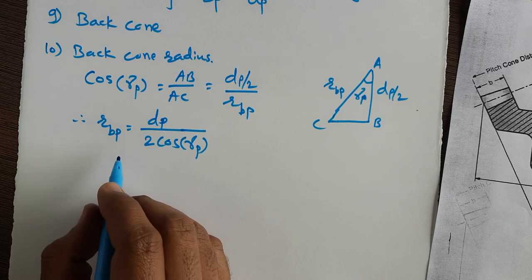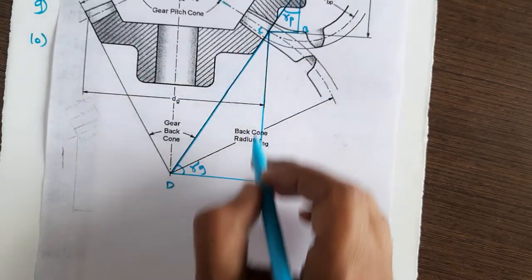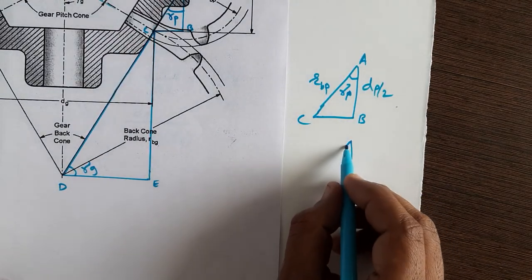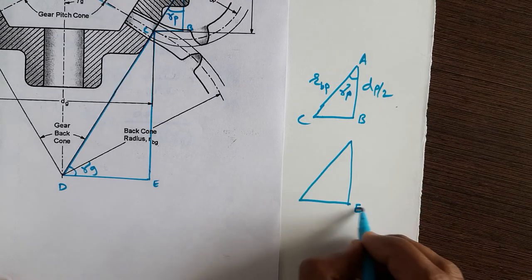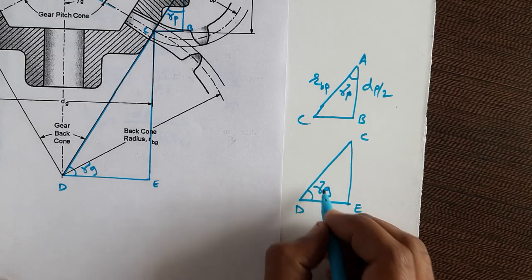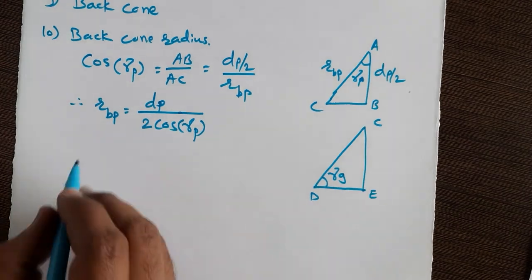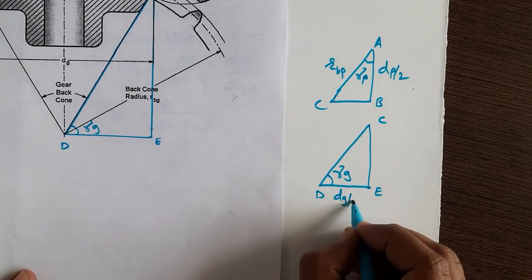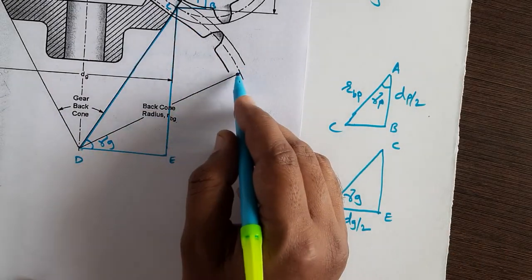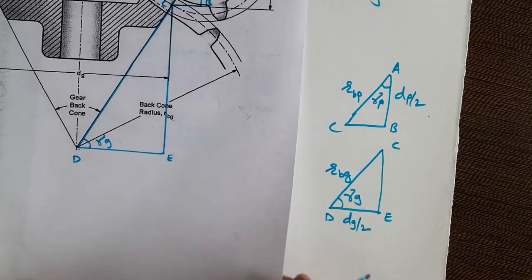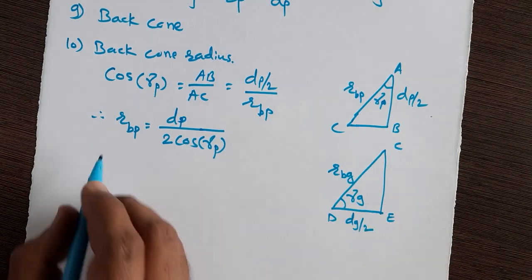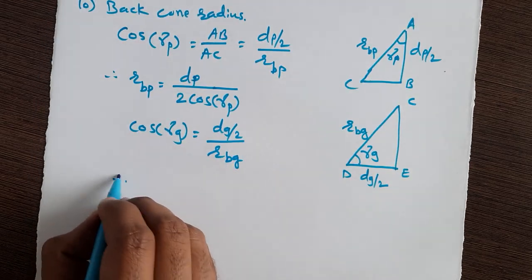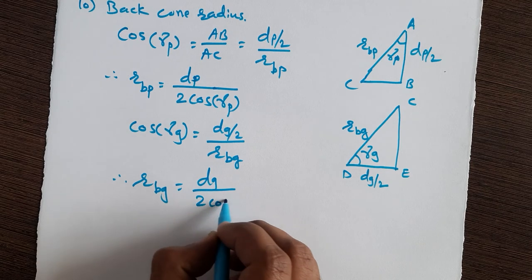Similarly, to find the back cone radius for the gear, we consider triangle CDE where this angle is gamma G. Here D2E equals DG by 2. Again we use cosine: cos of gamma G equals (DG/2) divided by RBG. Therefore, RBG equals DG divided by (2 times cos of gamma G). In this way you can find the back cone radius for the gear.